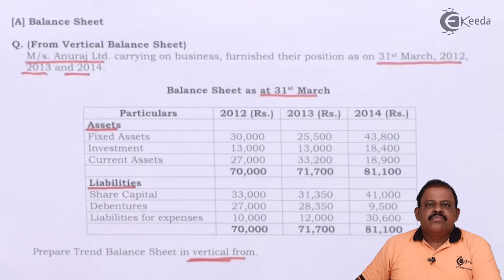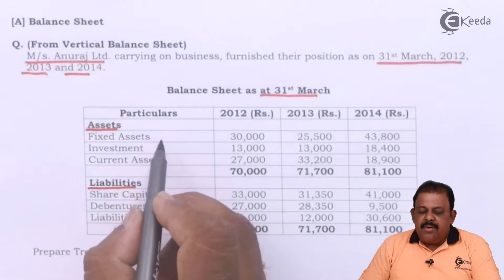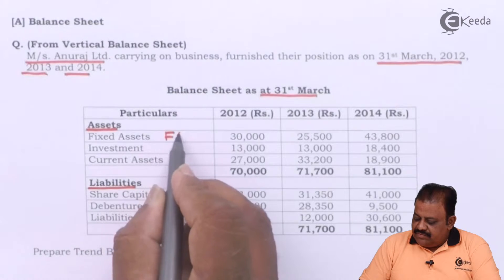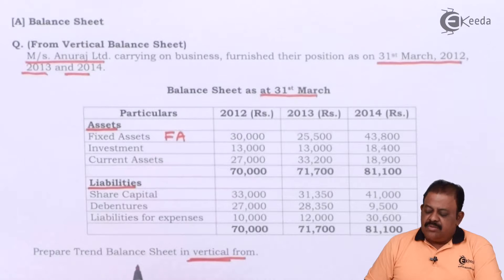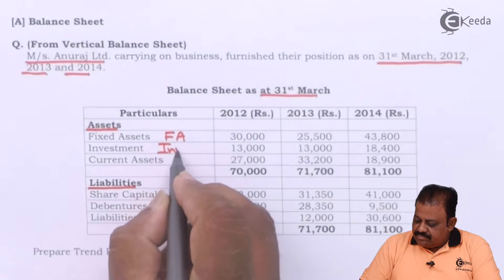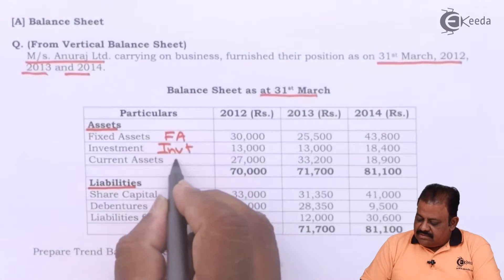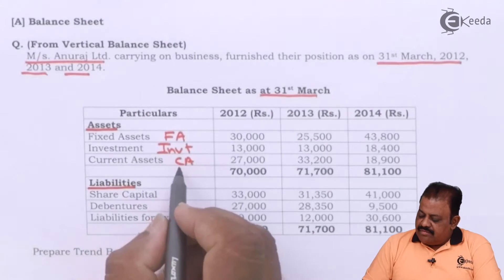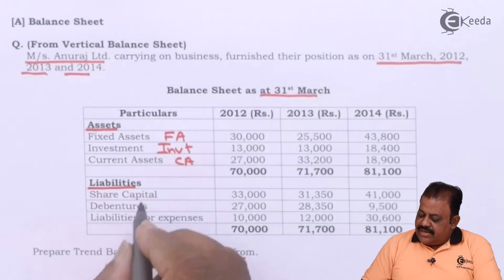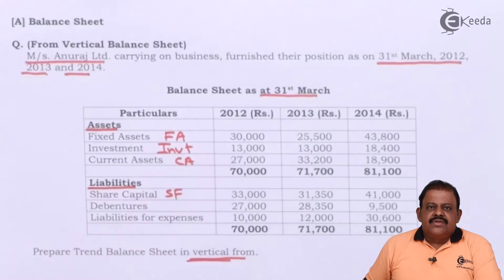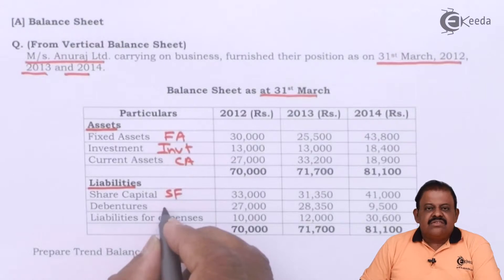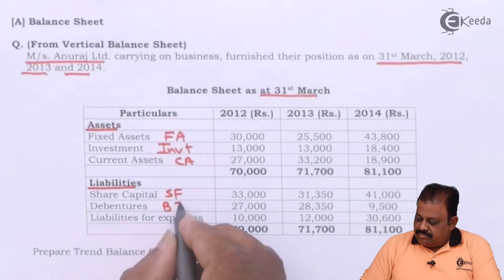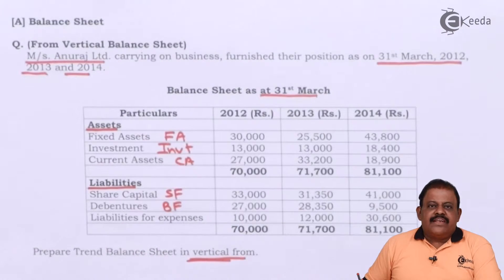We need to prepare a trend balance sheet in vertical form. Fixed assets will be part of application of funds, investments as long-term investments, and current assets from which we have to deduct current liabilities. Share capital goes under shareholders' fund, debentures under borrowed fund, and liabilities for expenses under current liabilities.